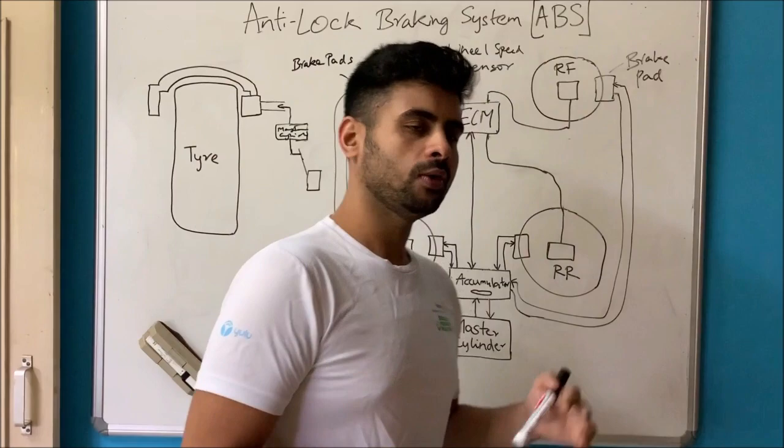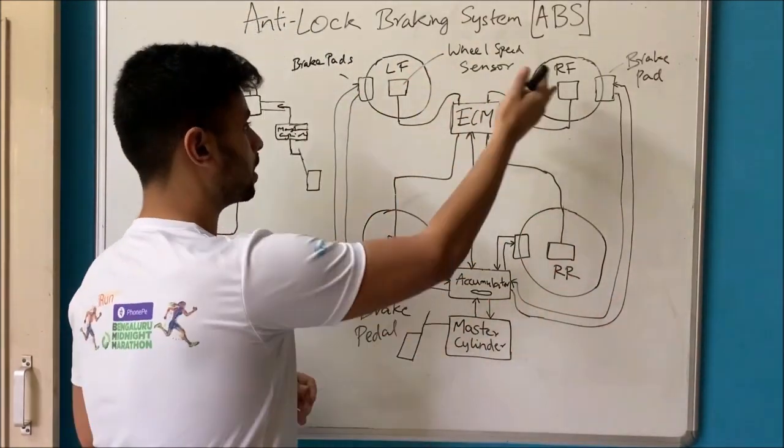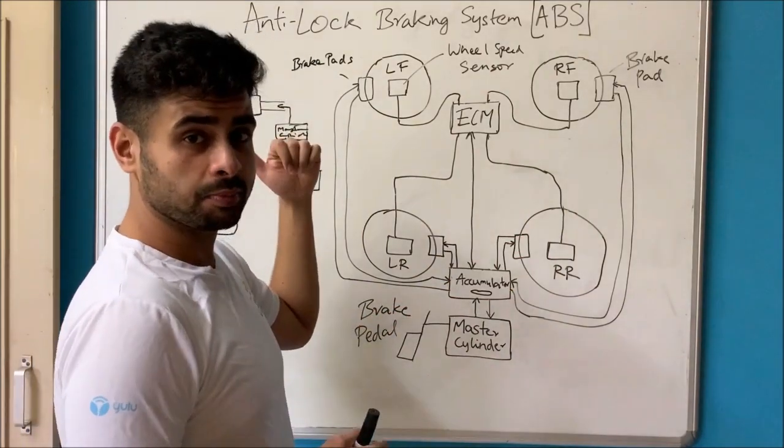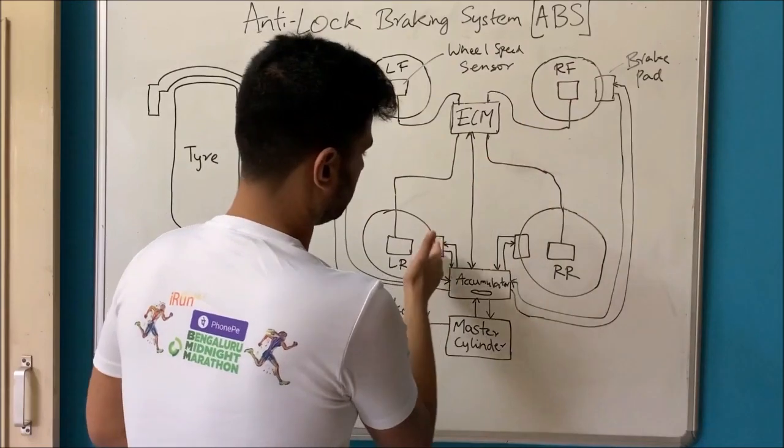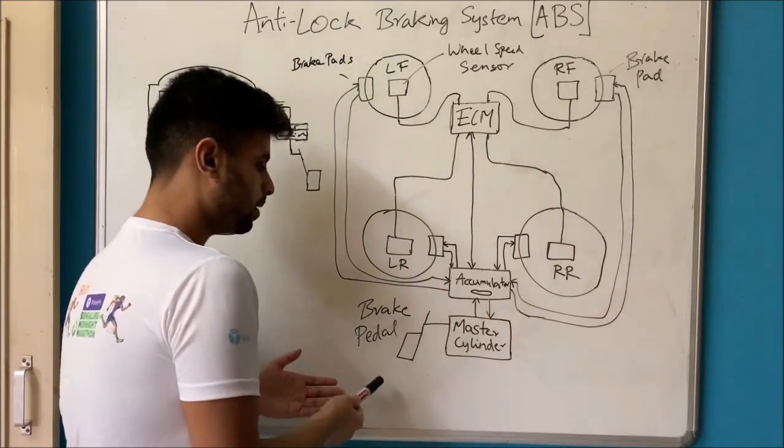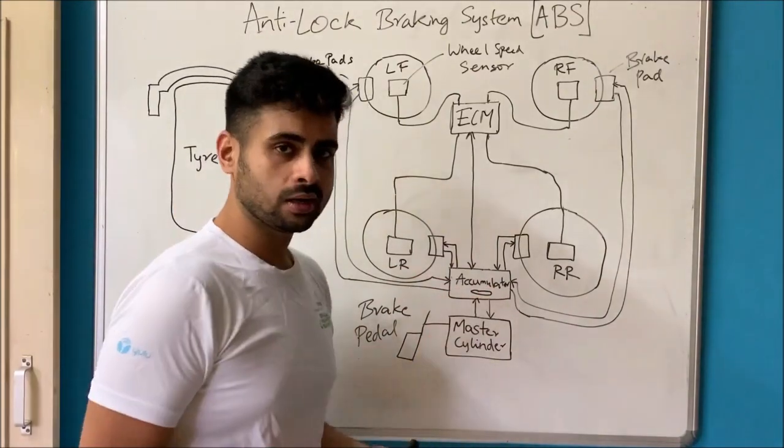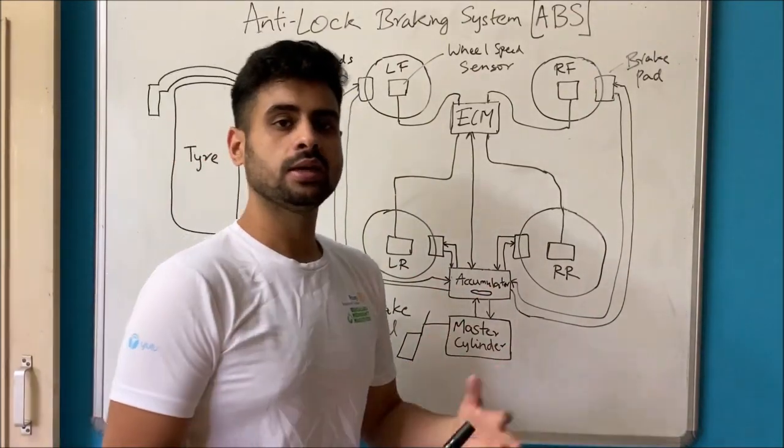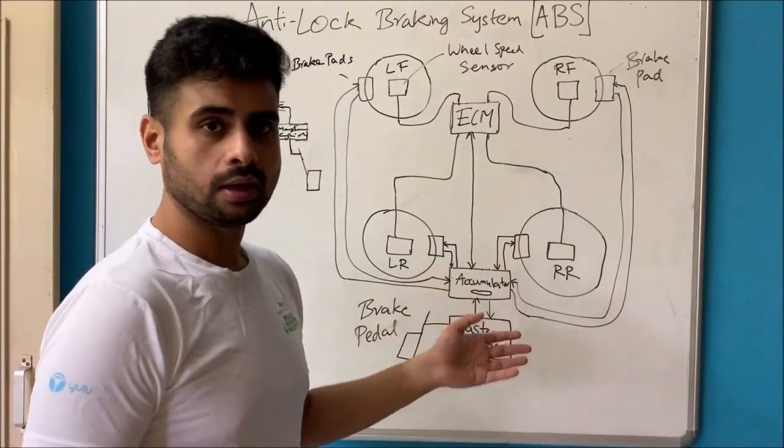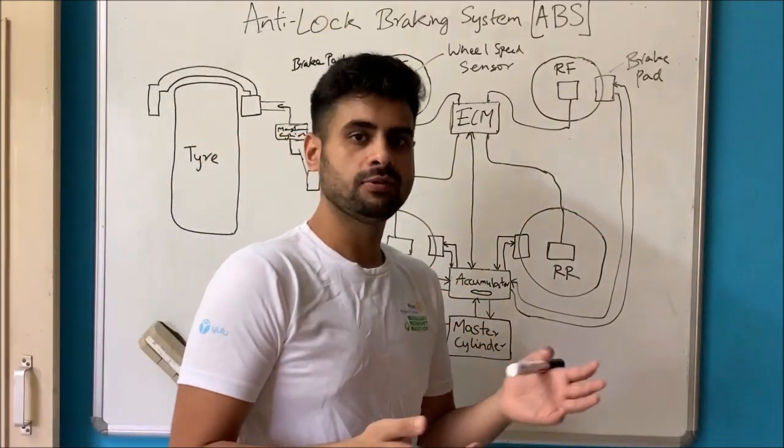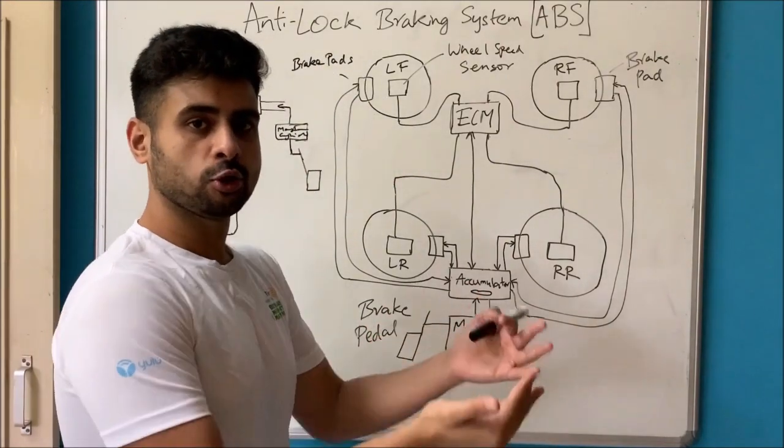So how does ABS work? We've got a vehicle here, four wheels: left front, right front, left rear and right rear. And we've got a disc brake which we will mount on all four. And we've got a brake pedal connected to the master cylinder, connected to something called an accumulator. The master cylinder contains the brake fluid. And the accumulator takes that brake fluid and uses a pump in here to pressurize it and then accumulate it.